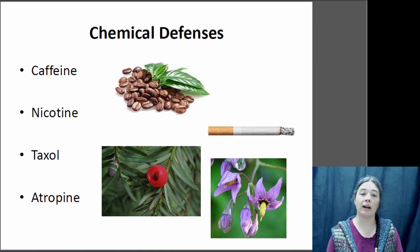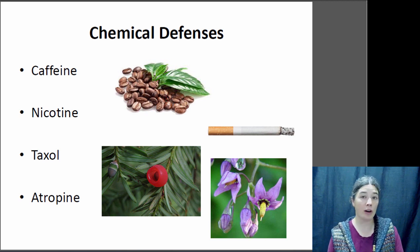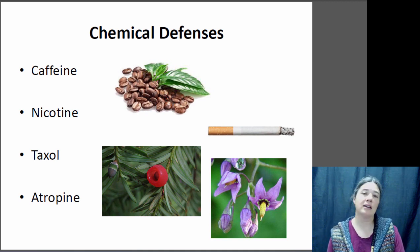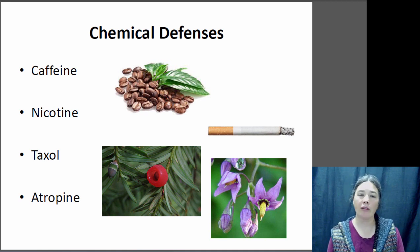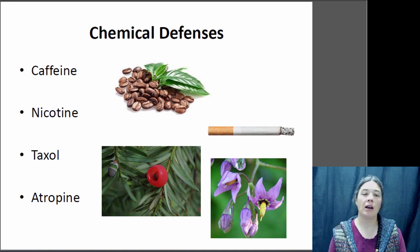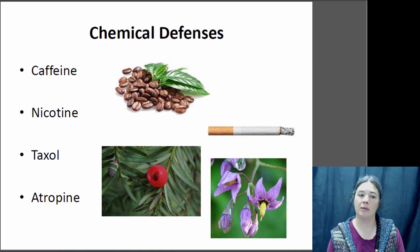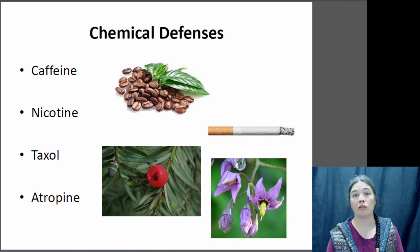Taxol is a compound produced by the Pacific yew. The plant uses it to prevent herbivory, but taxol was actually one of the first chemotherapy drugs discovered and can be used to treat cancer. Atropine is a drug used to treat low heart rate and other conditions, and it's produced by deadly nightshade, a relative of the tomato plant. All of these compounds are originally produced by the plant to protect themselves from predators, and all are toxic at high doses — caffeine poisoning, nicotine poisoning, and taxol kills cells, which is why it's used for chemotherapy.